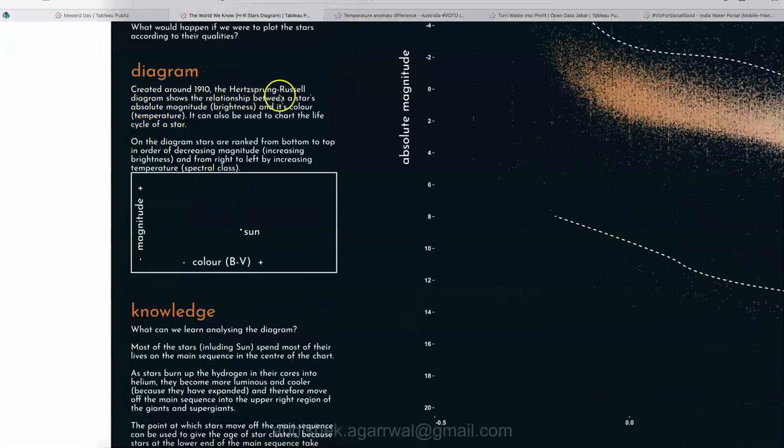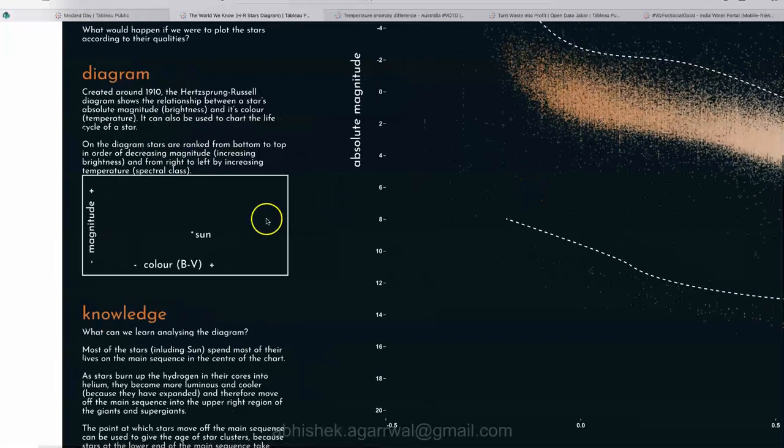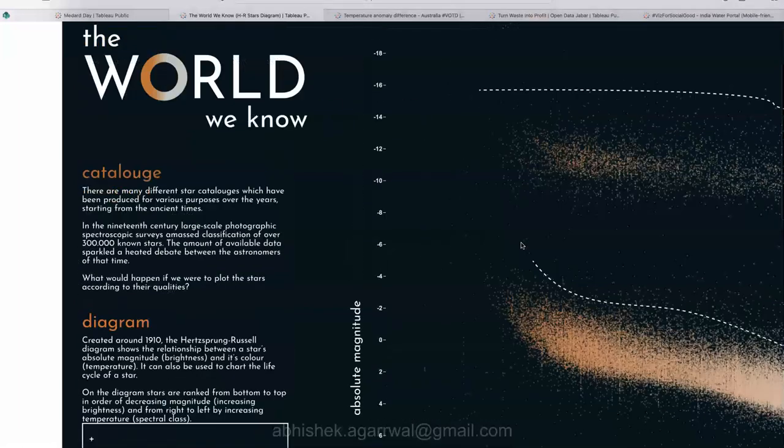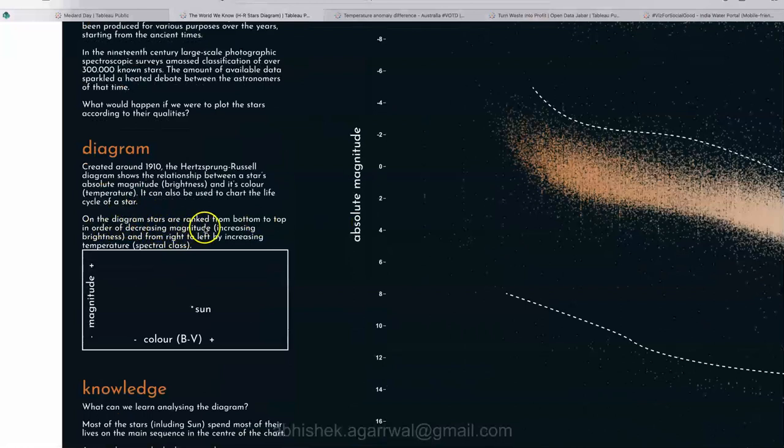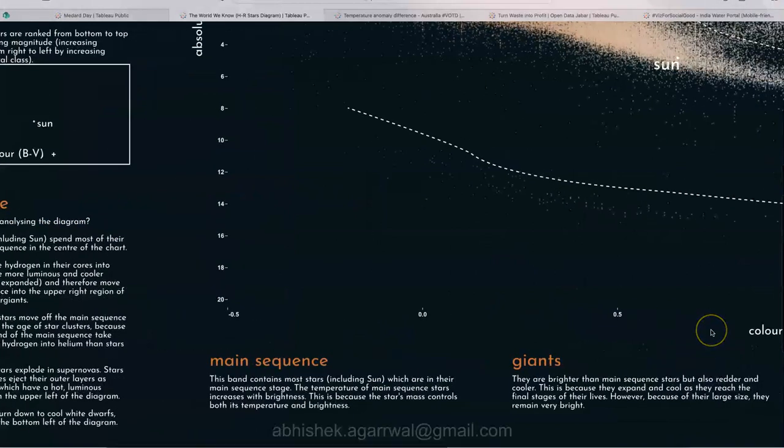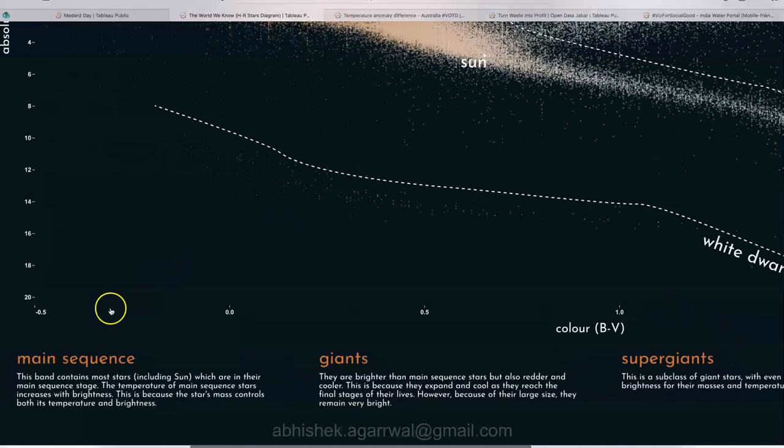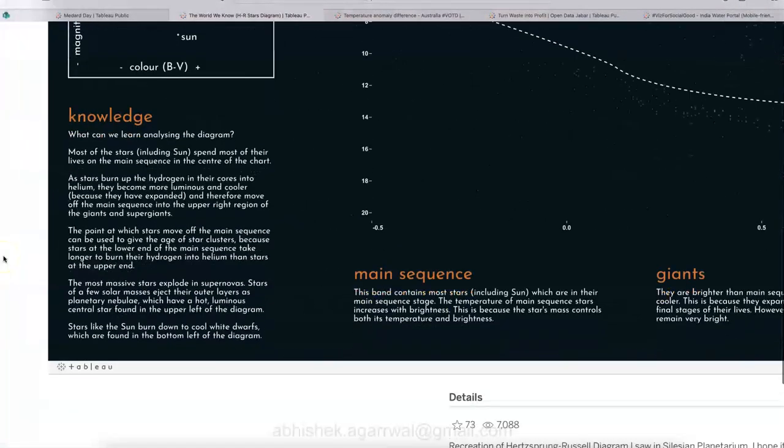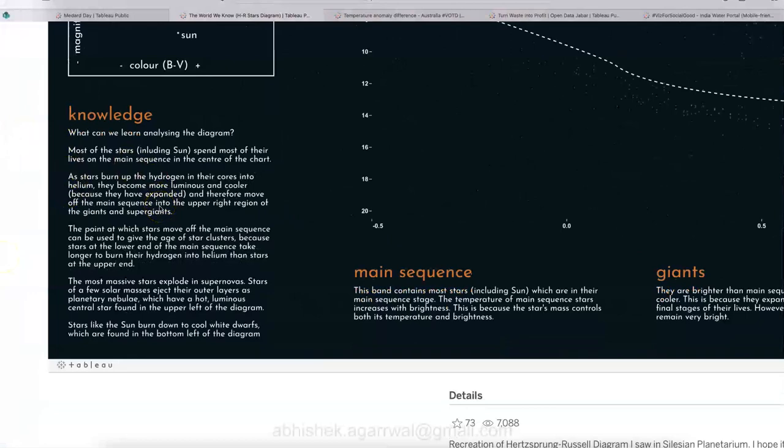So there are many different star catalogs which have been produced for various purposes over the years, starting from the ancient time. So this is where this diagram is created around 1910. The Hertzsprung and Russell diagram shows relationship between a star's absolute magnitude, that is the brightness and its color temperature. So it can be used in a chart of a life cycle of a star. So on the diagram, stars are ranked from bottom to top in order of decreasing of magnitude. That means increasing the brightness. So on the diagram, stars are ranked from right to left by increasing temperature. So from right this side to left as increasing temperature.